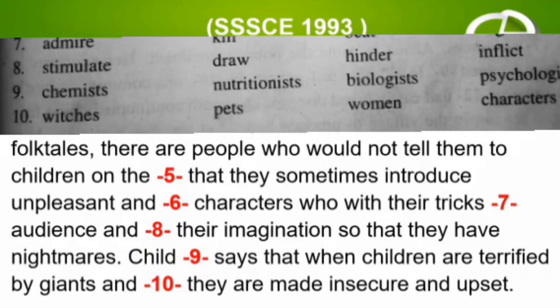So that they have nightmares. Child DASH says that — options: A. child chemist, B. child nutritionist, C. child biologist, D. child psychologist. The correct answer is D — child psychologist says that. When children are terrified by giants and DASH — options: A. witches, B. pets, C. women, D. characters. The correct answer is A — when children are terrified by giants and witches, they are made insecure and upset.